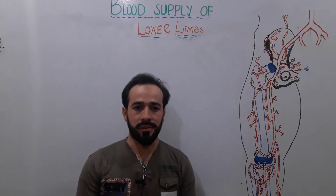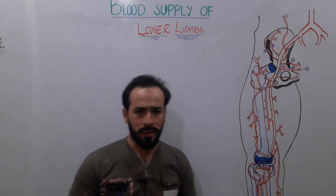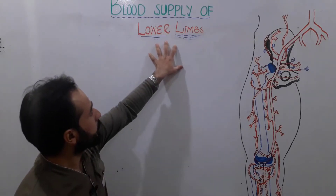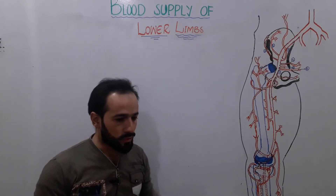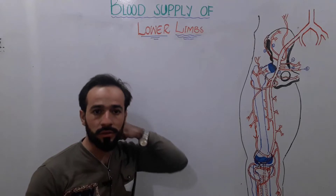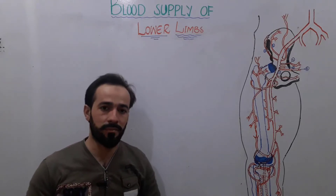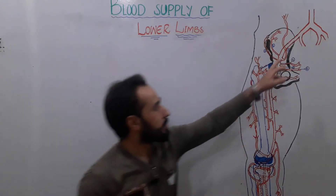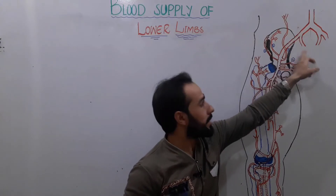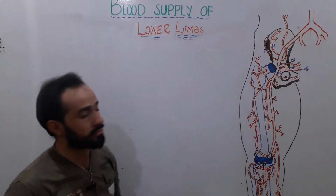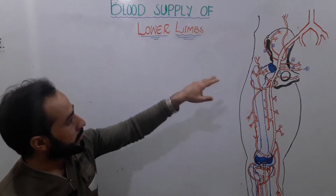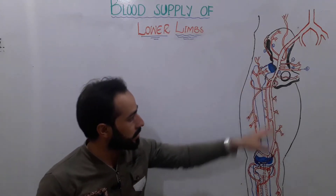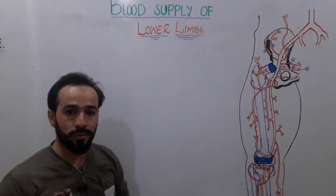Hello my dear students and friends, assalamu alaikum, welcome back. We are discussing the blood supply of the lower limbs. Before this lecture, I have recorded about the blood supply of the male and female pelvis — you can watch those lectures to know about the branches of the common iliac artery, the internal iliac artery, and the external iliac artery, which we are about to discuss right now.